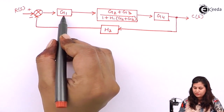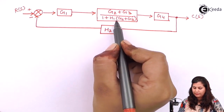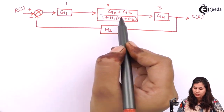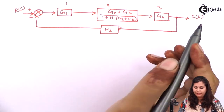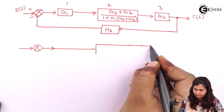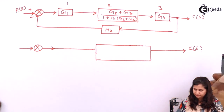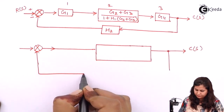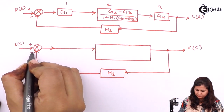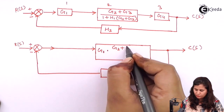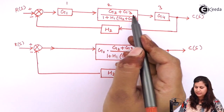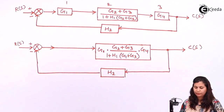Now these three blocks — G1, (G2 plus G3) upon (1 plus H1(G2 plus G3)), and G4 — are in series. So their transfer functions will be multiplied: G1 multiplied with (G2 plus G3) divided by (1 plus H1(G2 plus G3)), all multiplied with G4.